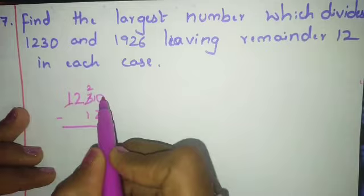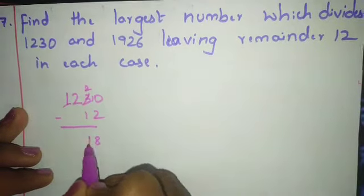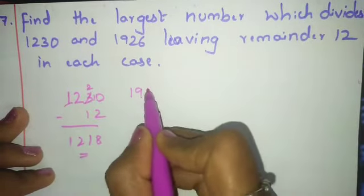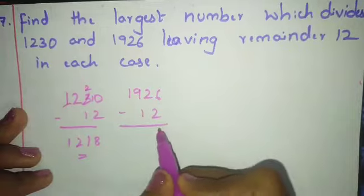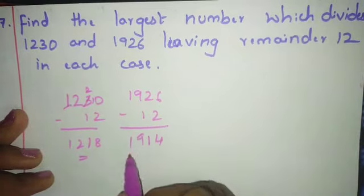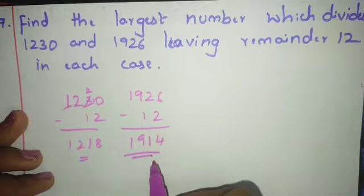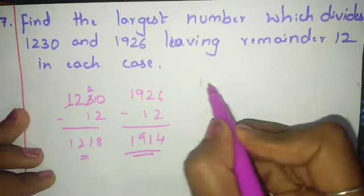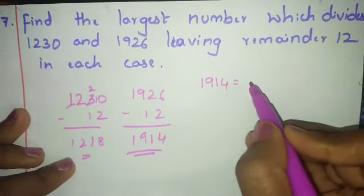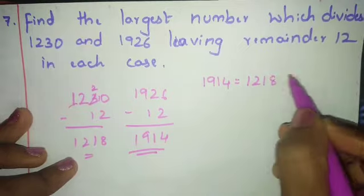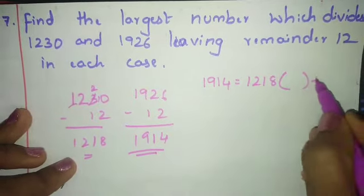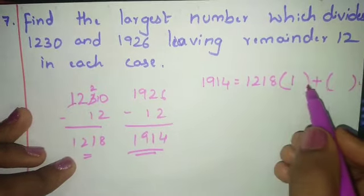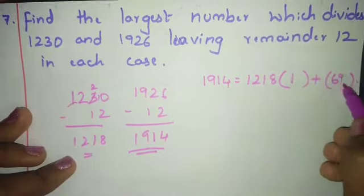1230 minus 12 gives 1218. 1926 minus 12 gives 1914. Now find HCF of 1914 and 1218. 1914 = 1218 × 1 + 696. Taking one, remainder is 696.